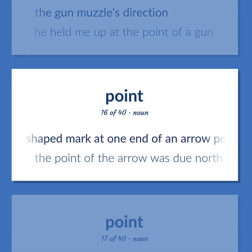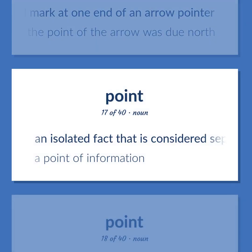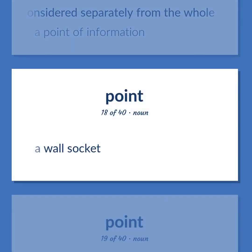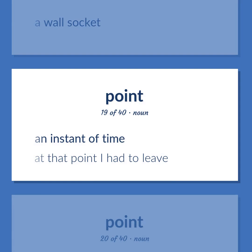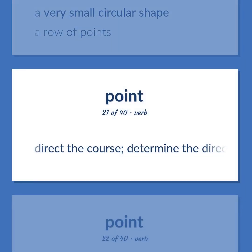A V-shaped mark at one end of an arrow pointer. The point of the arrow was due north. An isolated fact that is considered separately from the whole. A point of information. A wall socket. An instant of time. At that point I had to leave. A very small circular shape. A row of points. Direct the course; determine the direction of traveling.